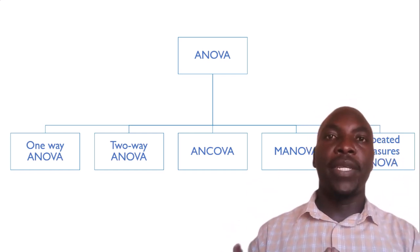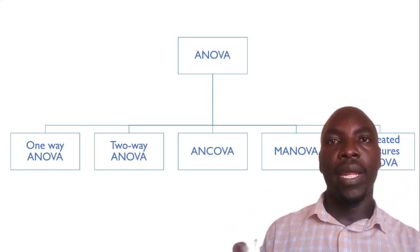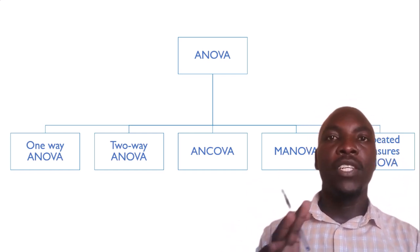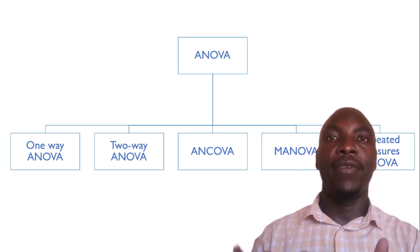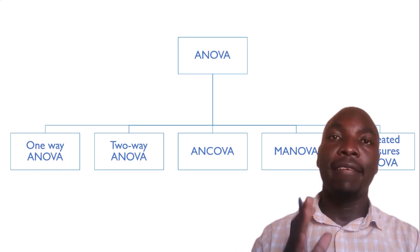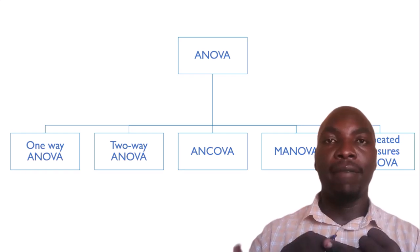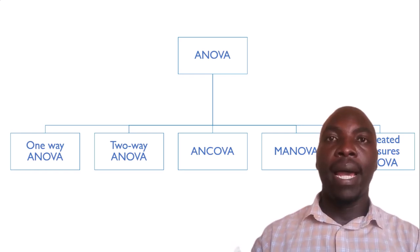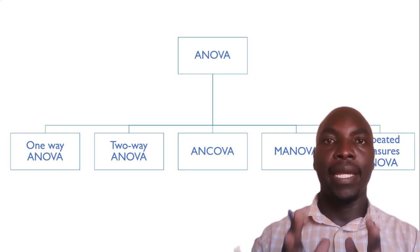Hello and welcome to this SPSS one-on-one series with Quality Analytics. Today we look at analysis of variance, commonly abbreviated as ANOVA. We are going to look at the different forms of ANOVA, when do you use which type of ANOVA, and what are the hypotheses that we are testing under each.